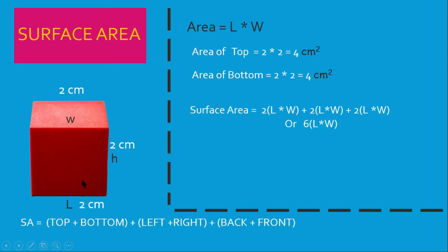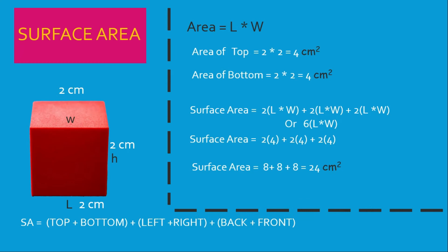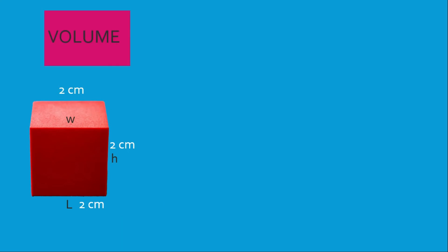That is how we arrive at this formula. For a cube, we can simply say six times length times width, because the cube has six equal sides. For a prism it would be different. So the surface area is going to be 2×4 + 2×4 + 2×4, and we end up with 24 centimeters squared. That is the total surface area of the cube we are using.